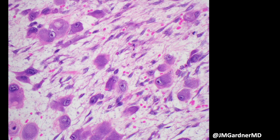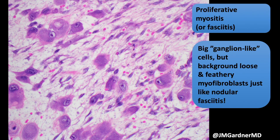What about these wild-looking cells? These big cells are kind of the exception to the rule — they're atypical — and you can see them in the setting of a background that looks like nodular fasciitis. We have a loose myxoid background with extravasated red cells, spindle and stellate myofibroblasts, and then these big ganglion-looking cells. When these ganglion-like cells are abundant, you can call this proliferative myositis if it's in the muscle, or proliferative fasciitis.